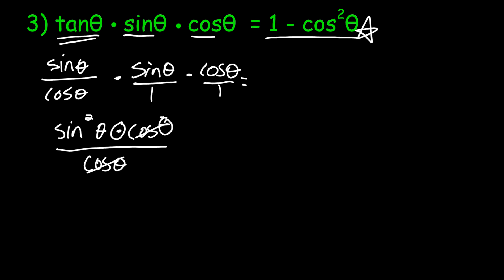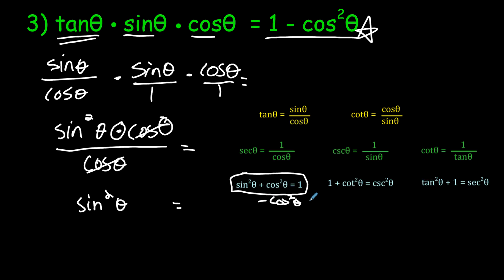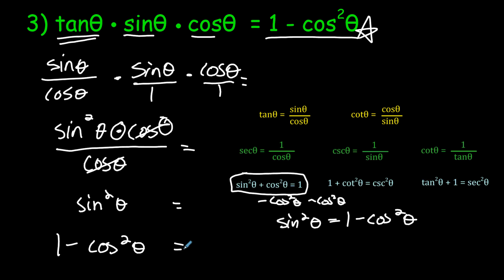Since the cosines are multiplied and appear on both top and bottom, I can cancel them out. That leaves sine squared theta. The right side is one minus cosine squared — not just sine squared — but from the Pythagorean identity, if I subtract cosine squared theta from both sides of sine squared plus cosine squared equals one, I get sine squared theta equals one minus cosine squared theta. That's exactly what we're looking for, so we've proved the left side equals one minus cosine squared theta. Done!